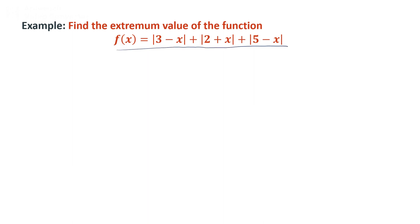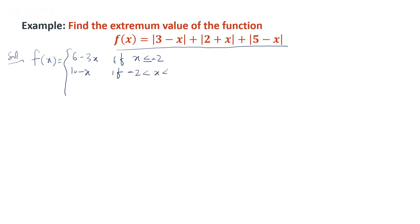Take one more example: find the extreme value of f(x) = |3 - x + 2| + |x| + |5 - x|. We rewrite this piecewise function as: 6 - 3x when x ≤ -2; 10 - x when -2 ≤ x ≤ 3; 4 + x when 3 ≤ x ≤ 5; and 3x - 6 when x ≥ 5.